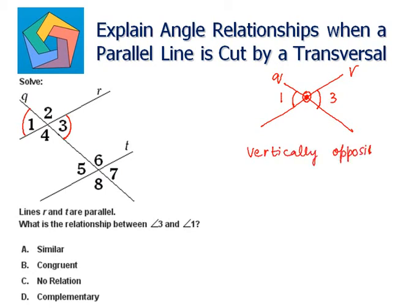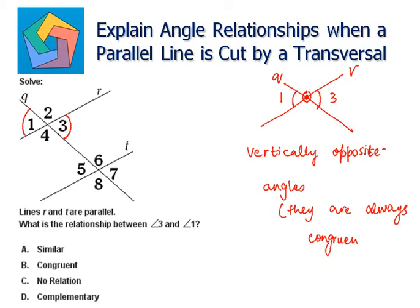Vertically opposite angles are always congruent. So congruent is our answer.